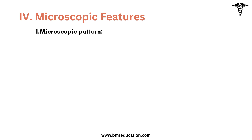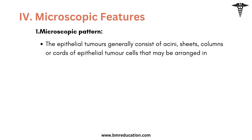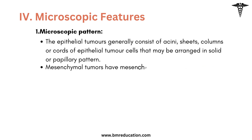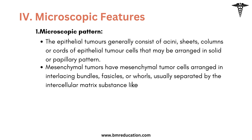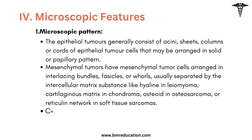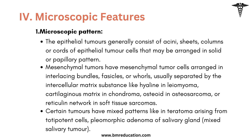The microscopic pattern: tumor cells may be arranged in a variety of patterns in different tumors. Epithelial tumors generally consist of sheets, columns, or cords of epithelial tumor cells that may be arranged in solid or papillary pattern, as seen in the shown histologic slides. Mesenchymal tumors have cells arranged in interlacing bundles, fascicles, or whorls, usually separated by intercellular matrix substances like hyaline in leiomyoma, cartilaginous matrix in chondroma, osteoid in osteosarcoma, or reticulin network in soft tissue sarcomas. Certain tumors have mixed patterns, like teratoma arising from totipotent cells and pleomorphic adenoma of the salivary gland.